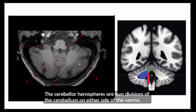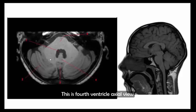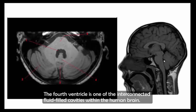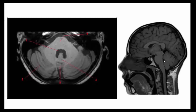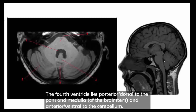The cerebellar hemispheres are two divisions of the cerebellum on either side of the vermis. This is the fourth ventricle on axial view and sagittal view. The fourth ventricle is one of the interconnected fluid-filled cavities within the human brain. These cavities and their content constitute the ventricular system of the brain. The fourth ventricle lies posterior to the pons and medulla, anterior to the cerebellum.